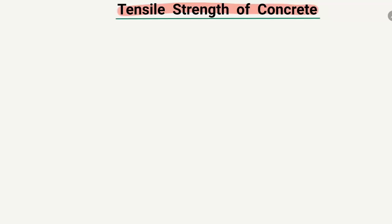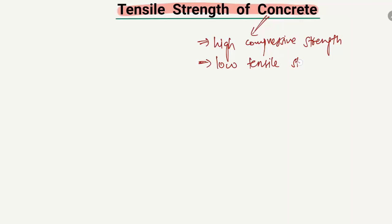We will explain why the tensile strength of concrete is ignored or sometimes taken really low compared to the compressive strength. Concrete is a construction material with very high compressive strength, which is why it is most commonly used. On the other hand, it has very low tensile strength, and usually the tensile strength is taken as 10% of the compressive strength.